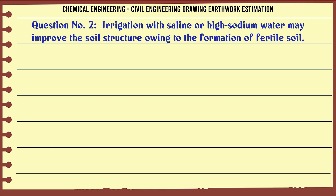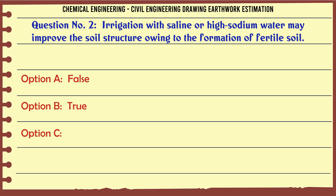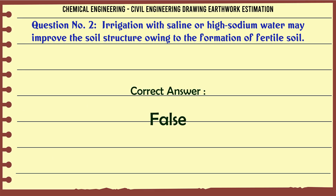Irrigation with saline or high sodium water may improve the soil structure owing to the formation of fertile soil. A. False. B. True. The correct answer is: False.